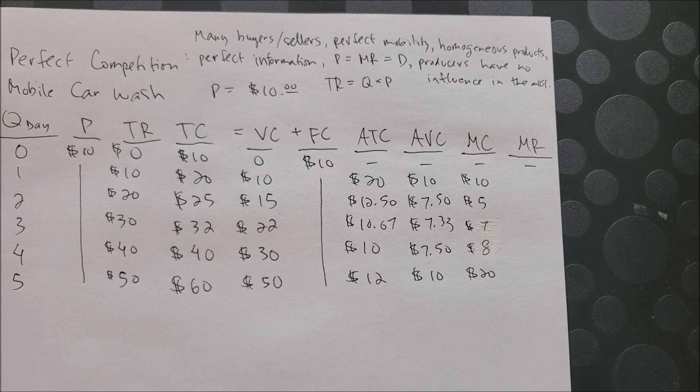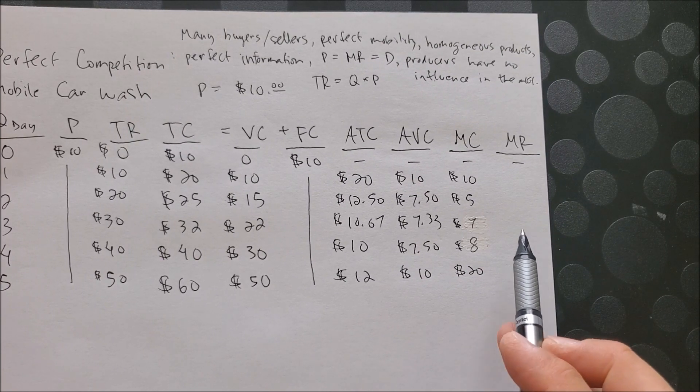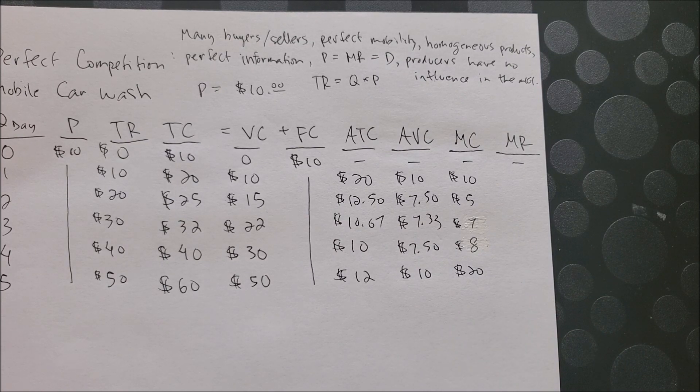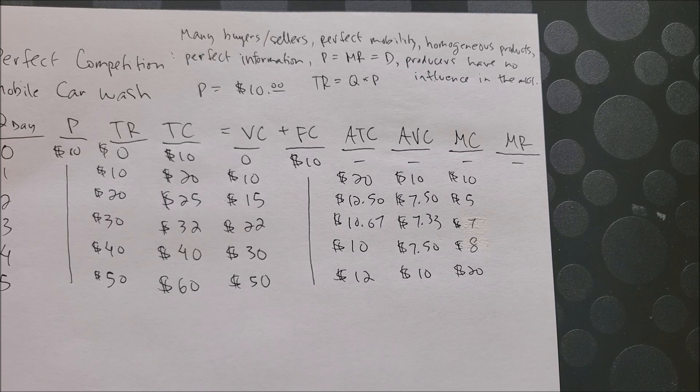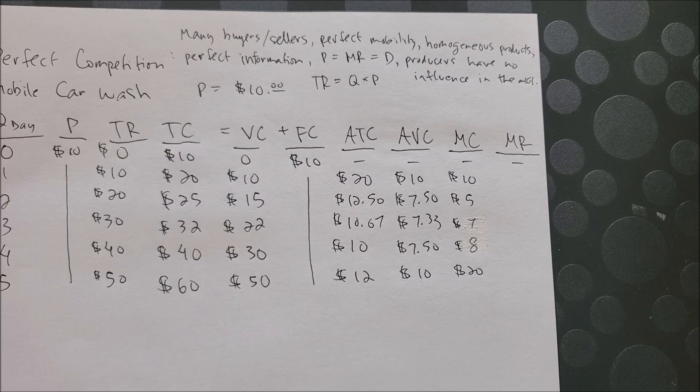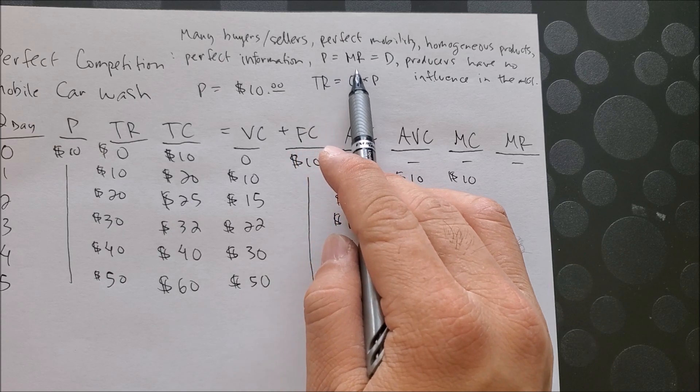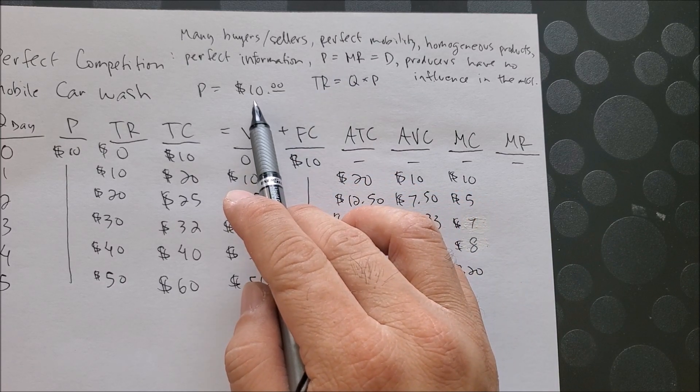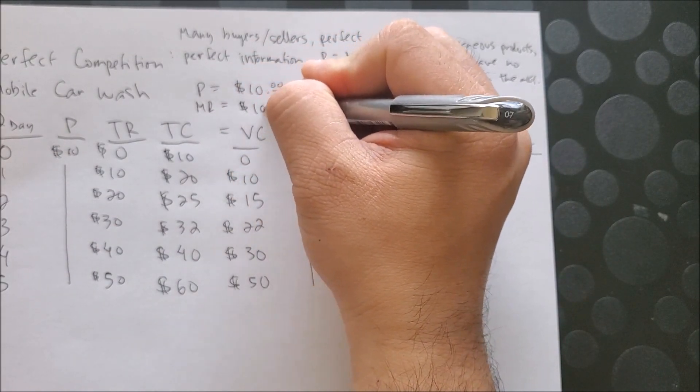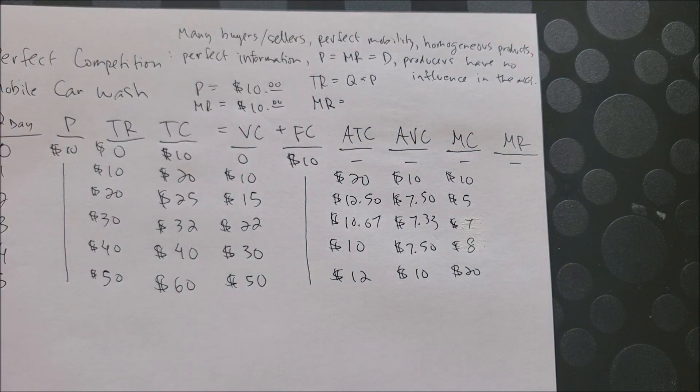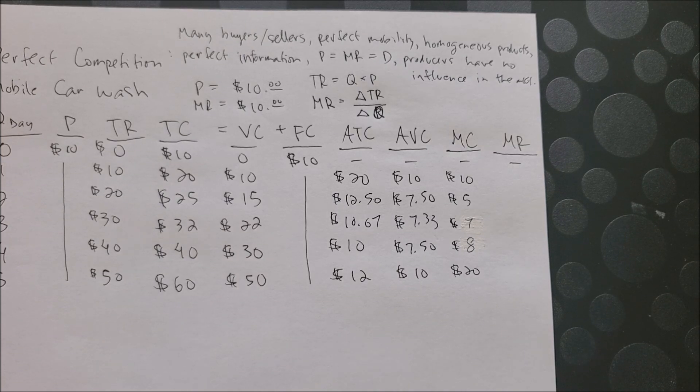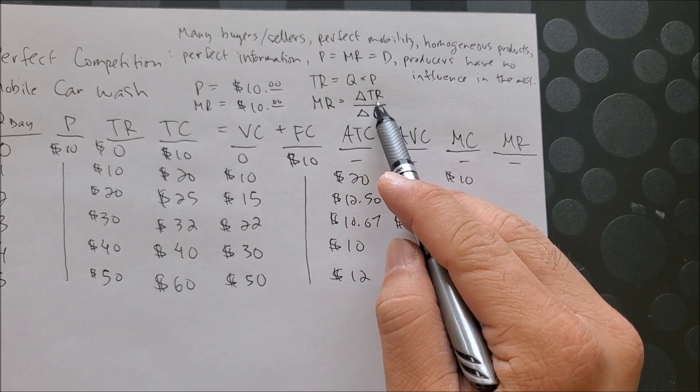So now that we have completed the TR column, we have a new column at the very end called MR. Now MR stands for marginal revenue. And if you remember, marginal means one more unit of revenue is what you're going to earn. So marginal revenue measures how much revenue you're going to earn when you are going to wash one more vehicle. And so we know from the perfect competitive market assumption that price, which is demand, equals MR. We know that price is ten dollars, which means MR should also be ten dollars. Now the equation is straightforward. It is just like calculating the marginal cost, except we are replacing all the C's for R's. So marginal revenue is a change in total revenue over the change in quantity.